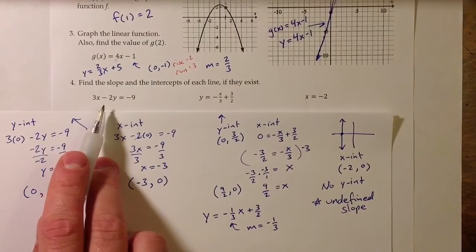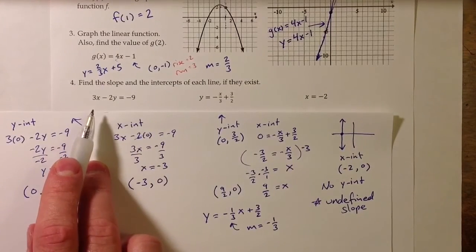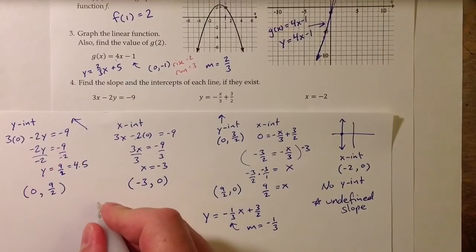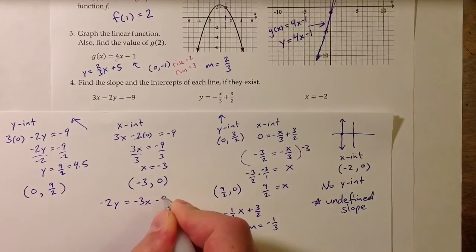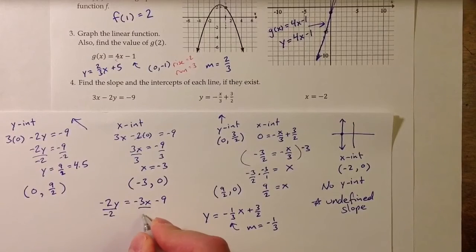For the first equation, it helps to put it into slope-intercept form to find the slope. I can subtract 3x from both sides and then divide everything by negative 2.